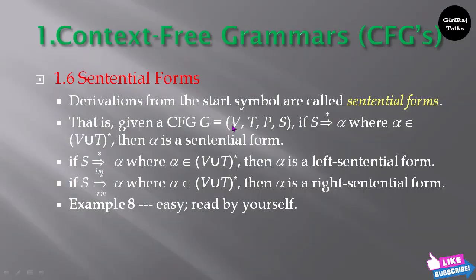G equals V, T, P, and S. If S derives to star alpha where alpha belongs to V union T of star.